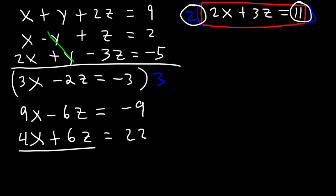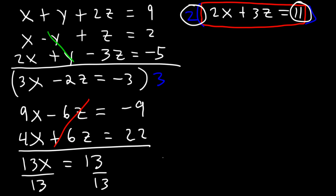So let's add these two equations. The z terms will cancel. 9x plus 4x is 13x. Negative 9 plus 22, or 22 minus 9, is 13 as well. So if we divide both sides by 13, we can see that x is equal to 1.